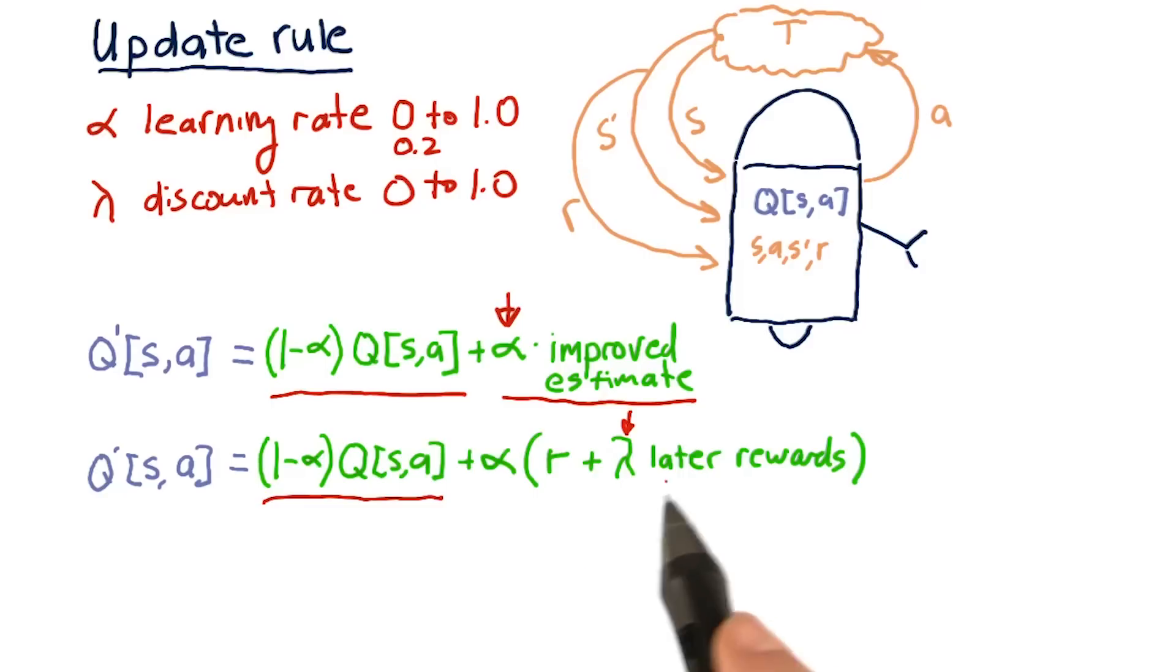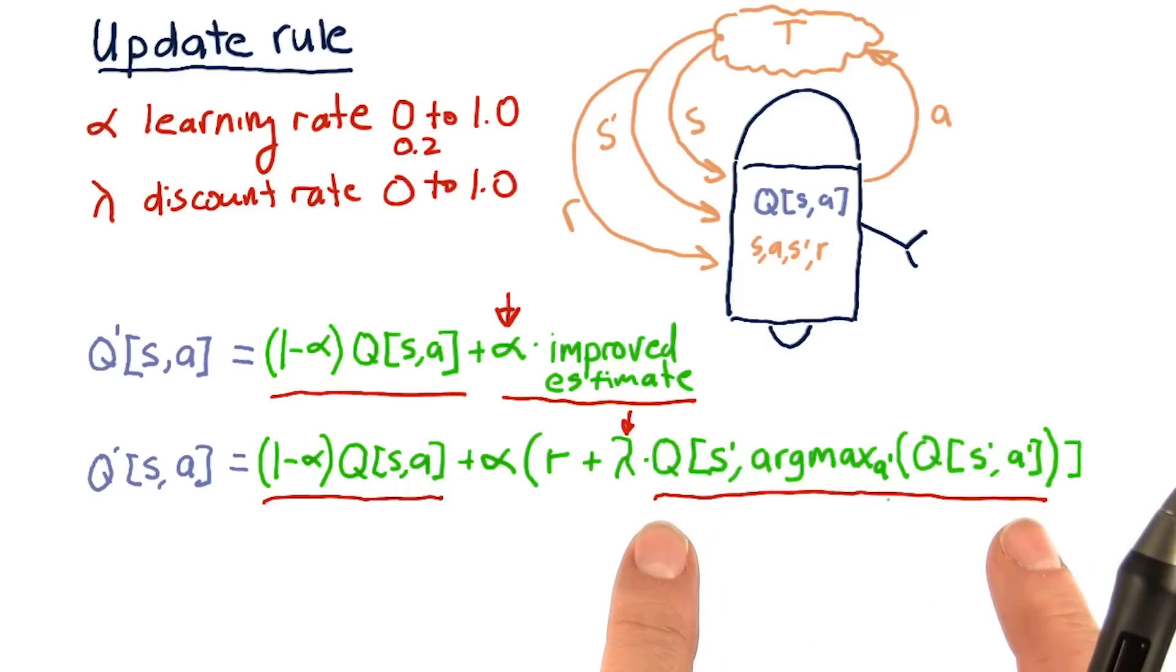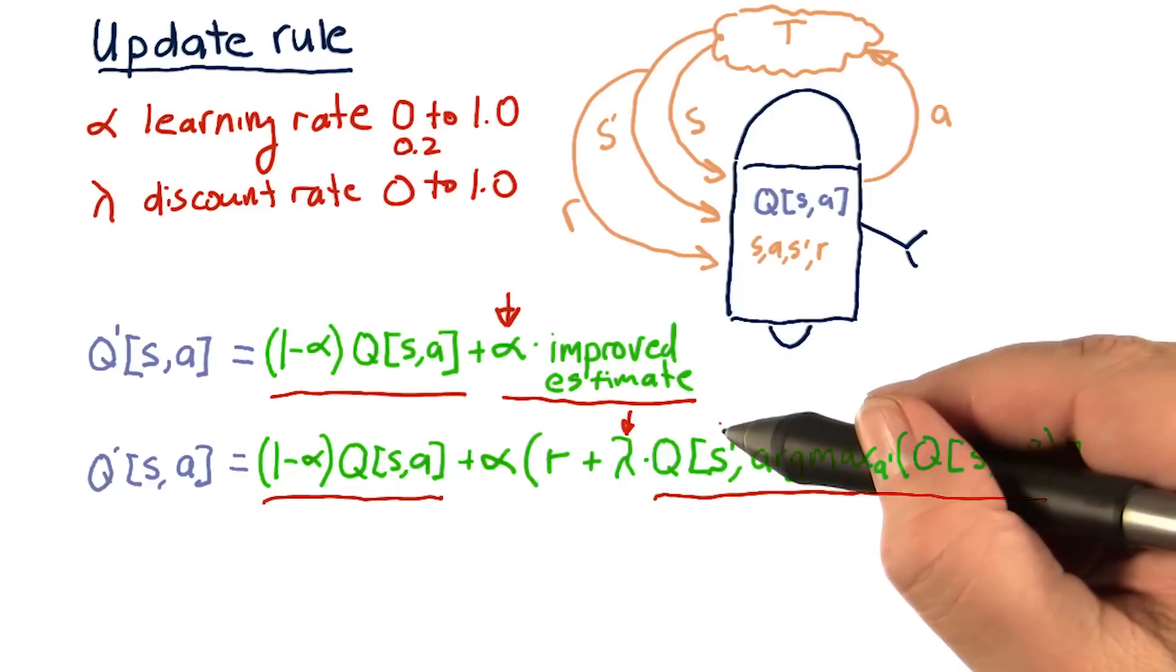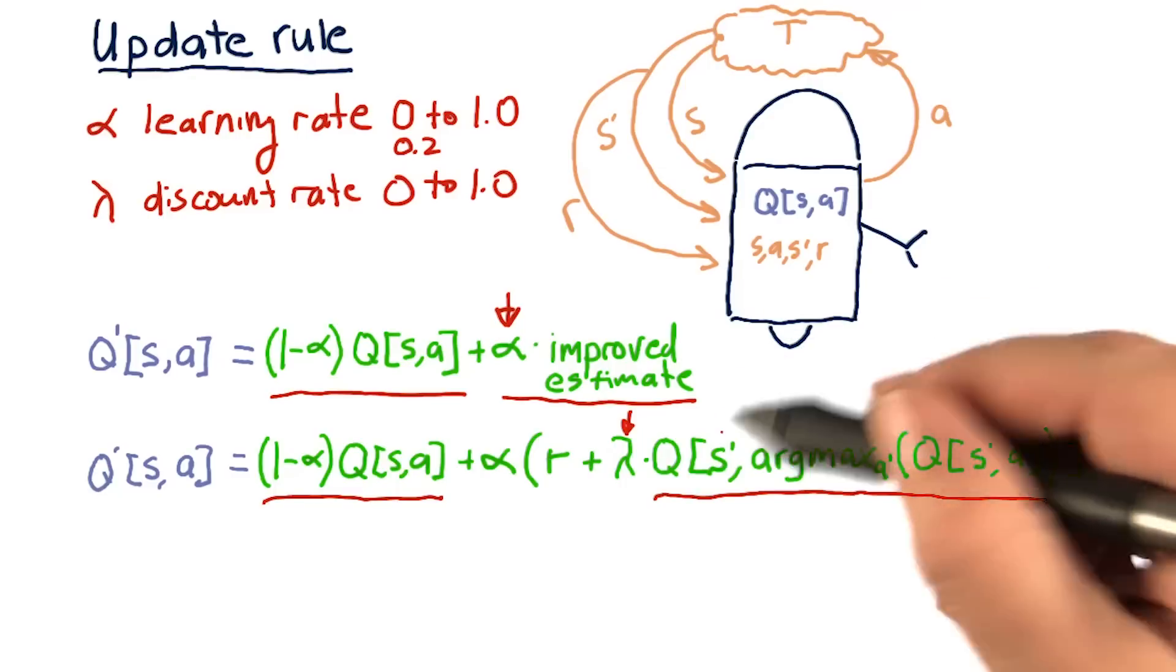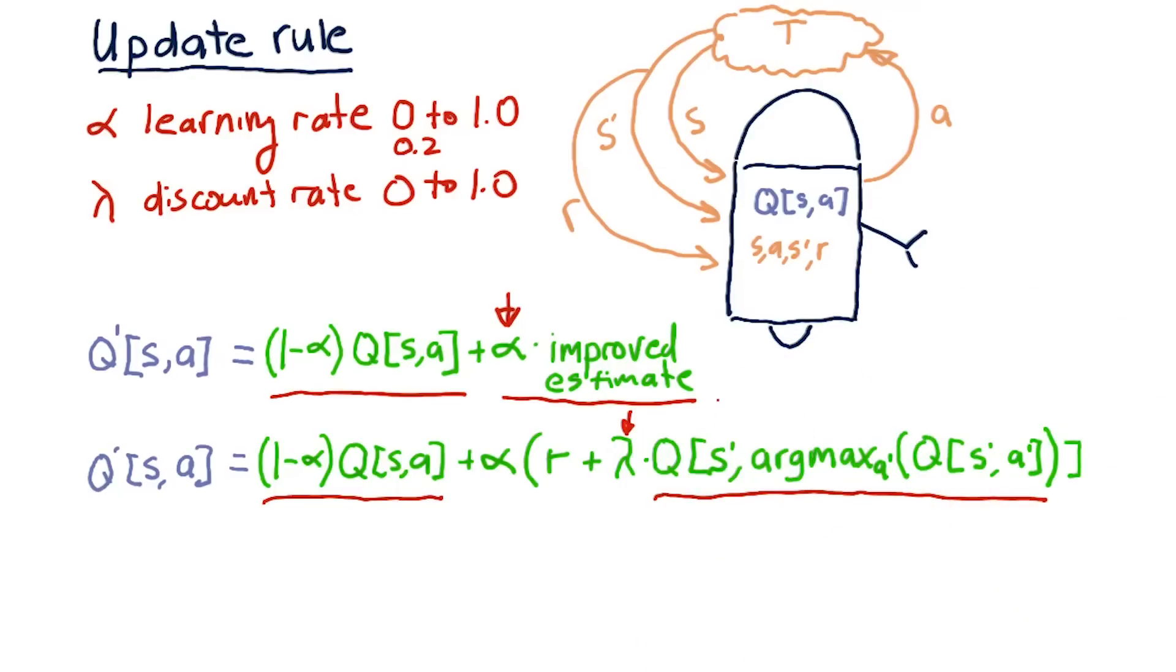Now, we have to expand this component here in a little bit more detail. This next part here is a little bit tricky, but don't worry, we're going to step through it step by step. This component represents our future discounted rewards. In other words, we end up in state S prime. And from then on out, we're going to act optimally, or at least the best that we know how to.